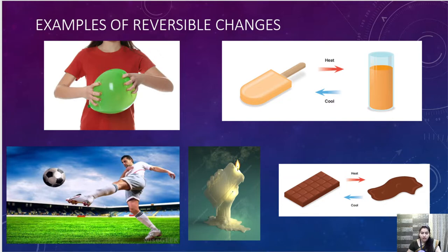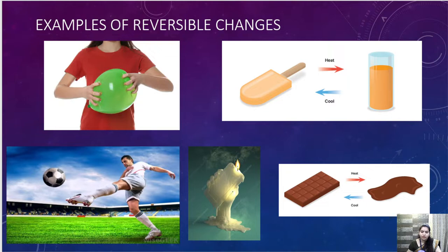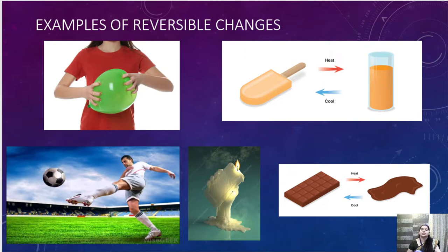Melting of wax is also a reversible change. When we heat a candle, the wax melts, but when it is cooled it solidifies again and becomes wax once more. What about chocolates? When you purchase a chocolate and keep it in a fridge, it remains solidified. If it melts, you can put it back in the fridge and it will again solidify. So all these are examples of reversible change.